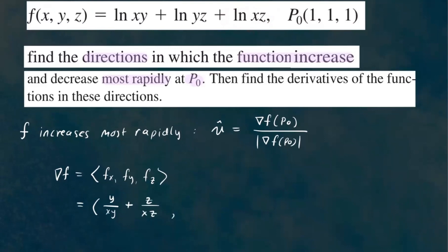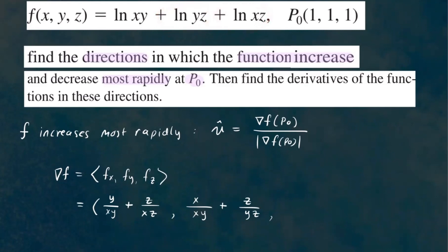Now the partial derivative of f with respect to y: we differentiate the terms where y is involved. The first term gives us x over xy, and differentiating the next term with respect to y gives z over yz. The partial derivative of f with respect to z differentiates the two terms involving z: the first term gives y over yz, and the last term gives x over xz. So these are our partial derivatives respectively.